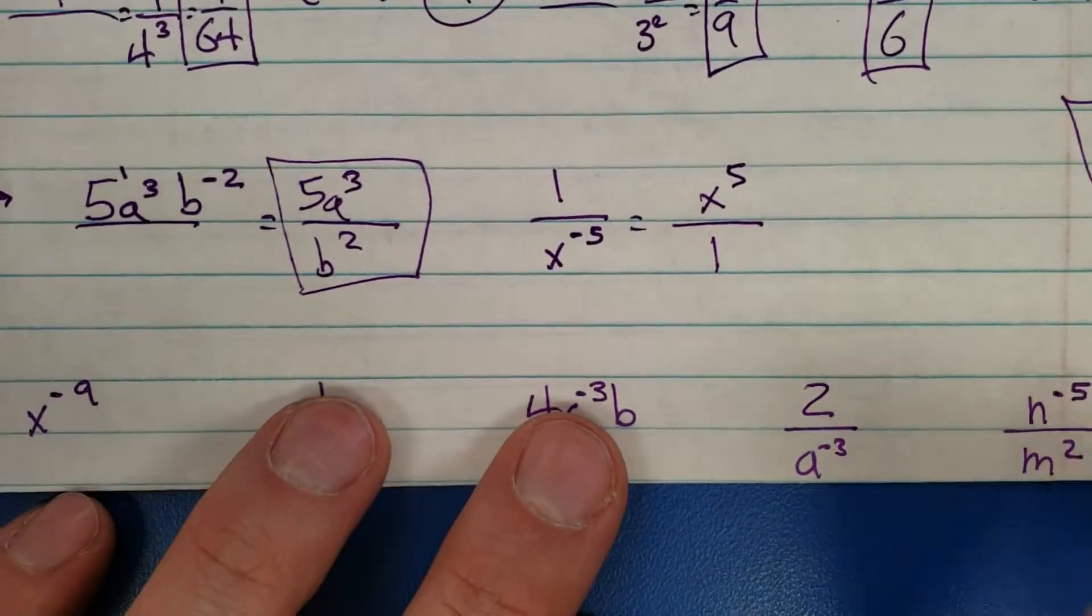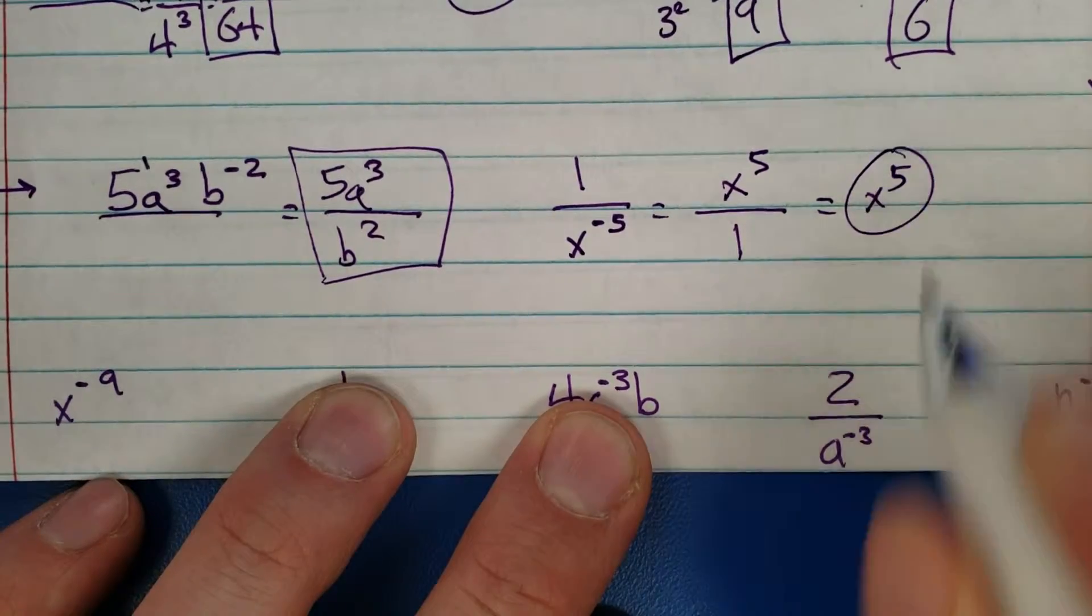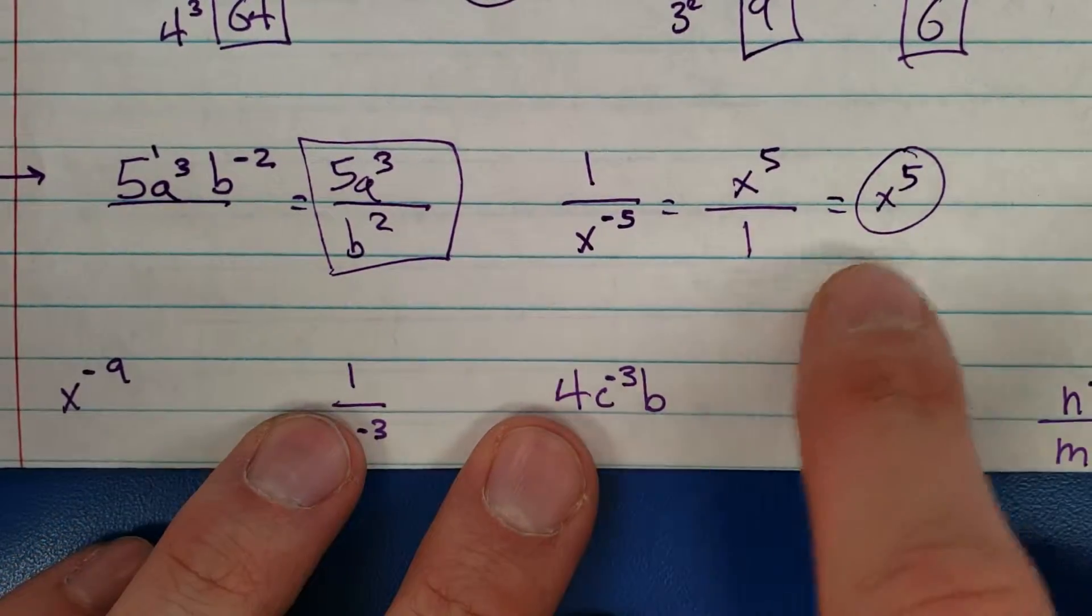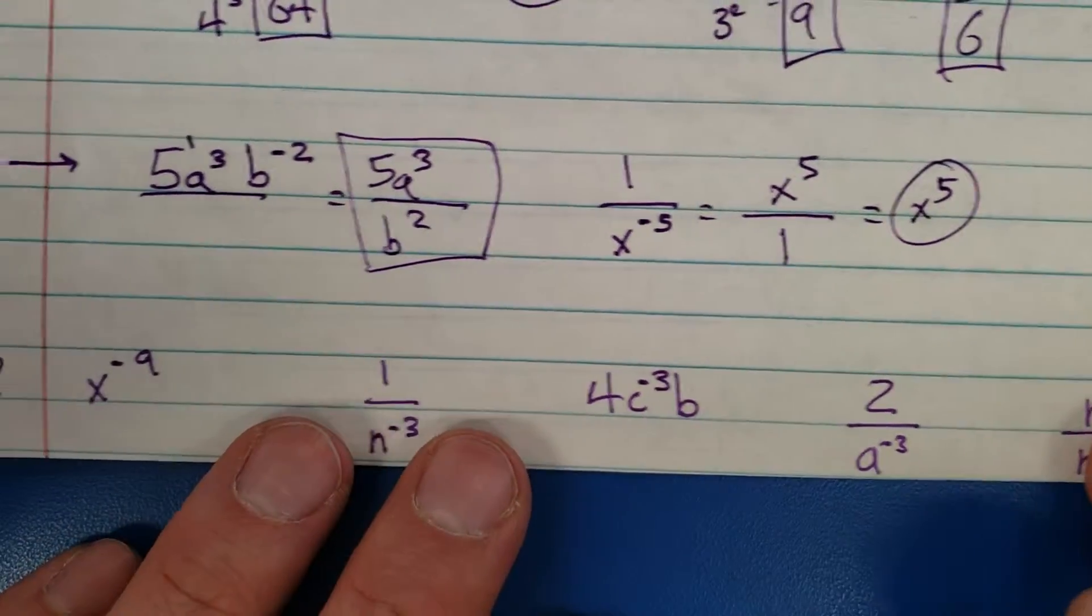So you could use a one to fill in the space, but we all know we don't just leave ones on the bottom of numbers. You just don't have random one denominators everywhere. So there you go. It's on the bottom, you can move it up. It's on the top, you move it down. If it's negative it has to move.